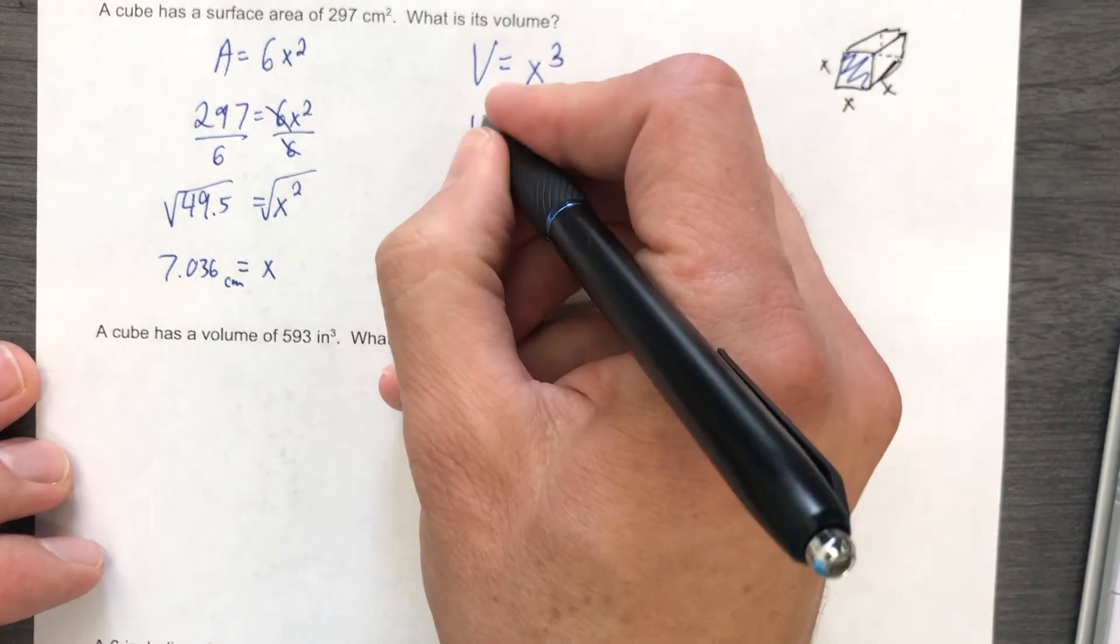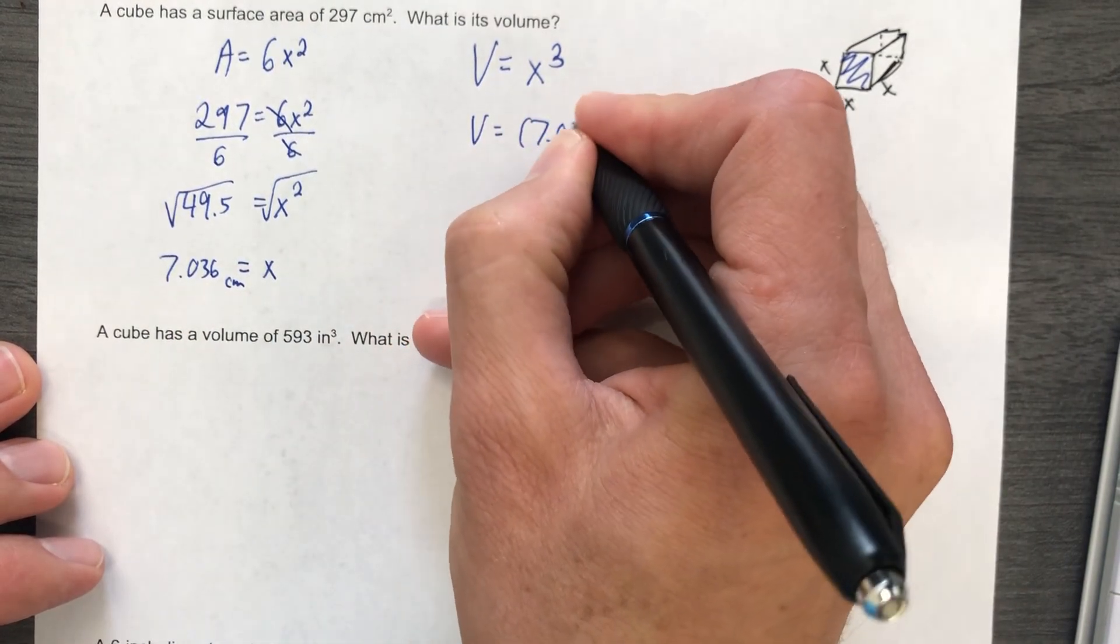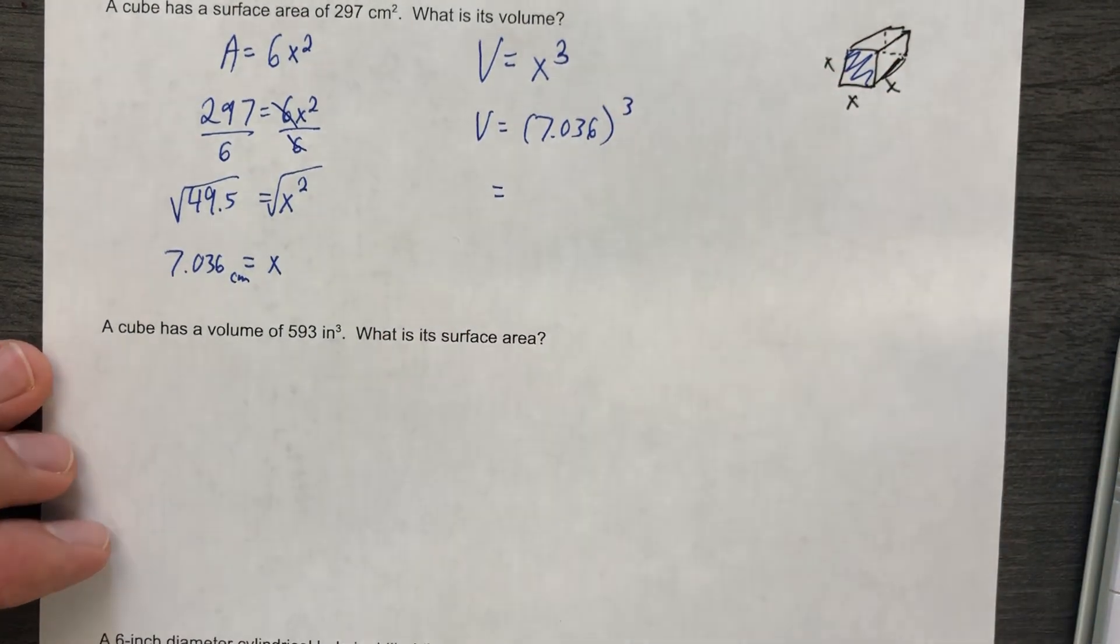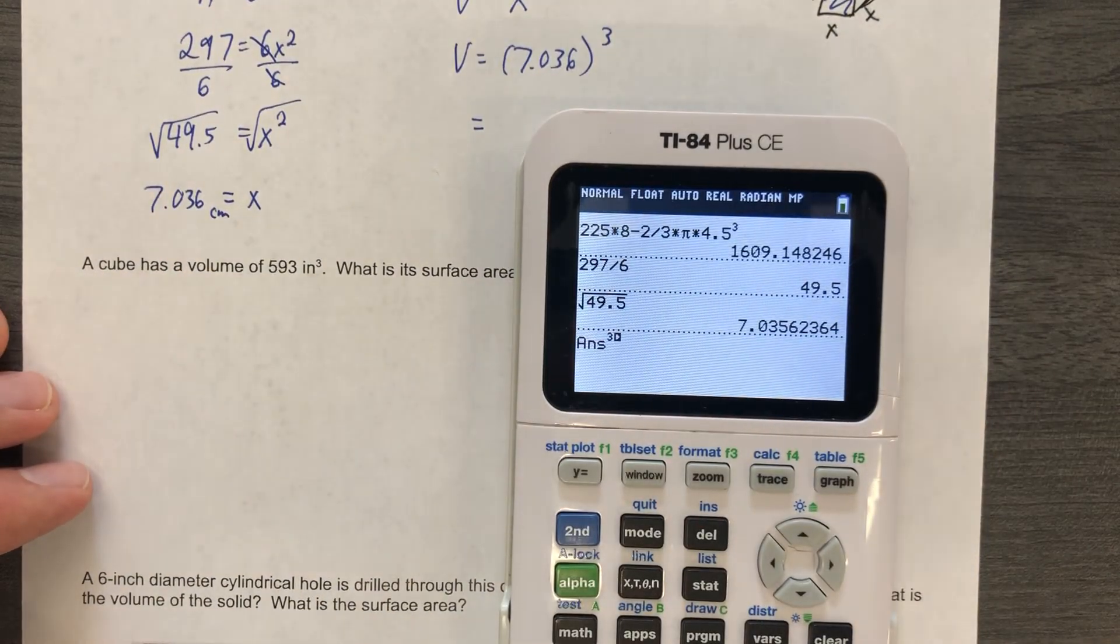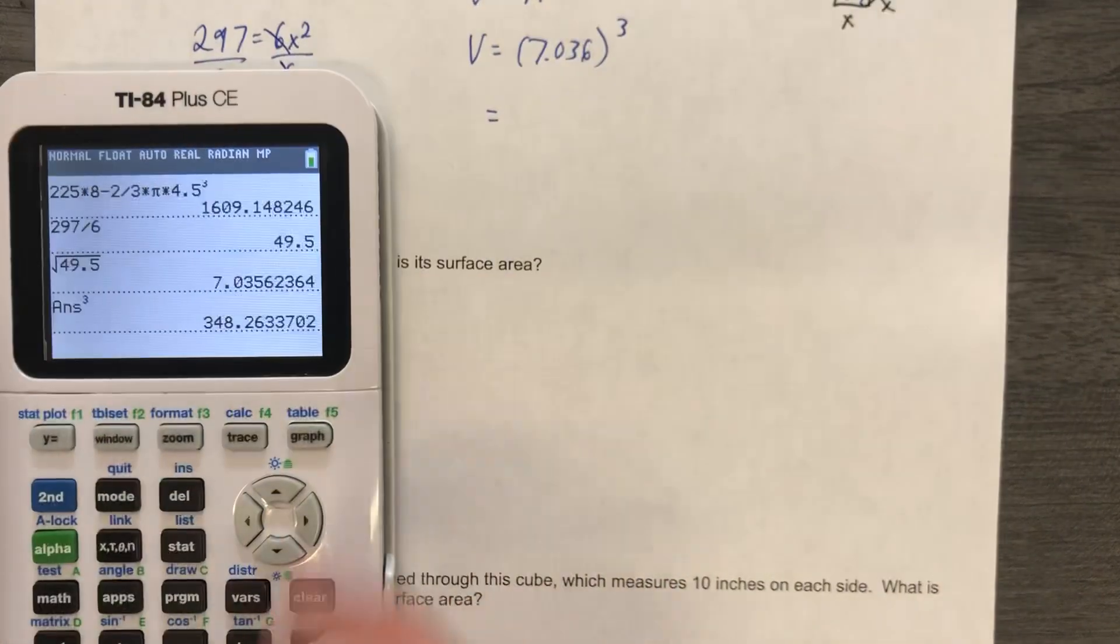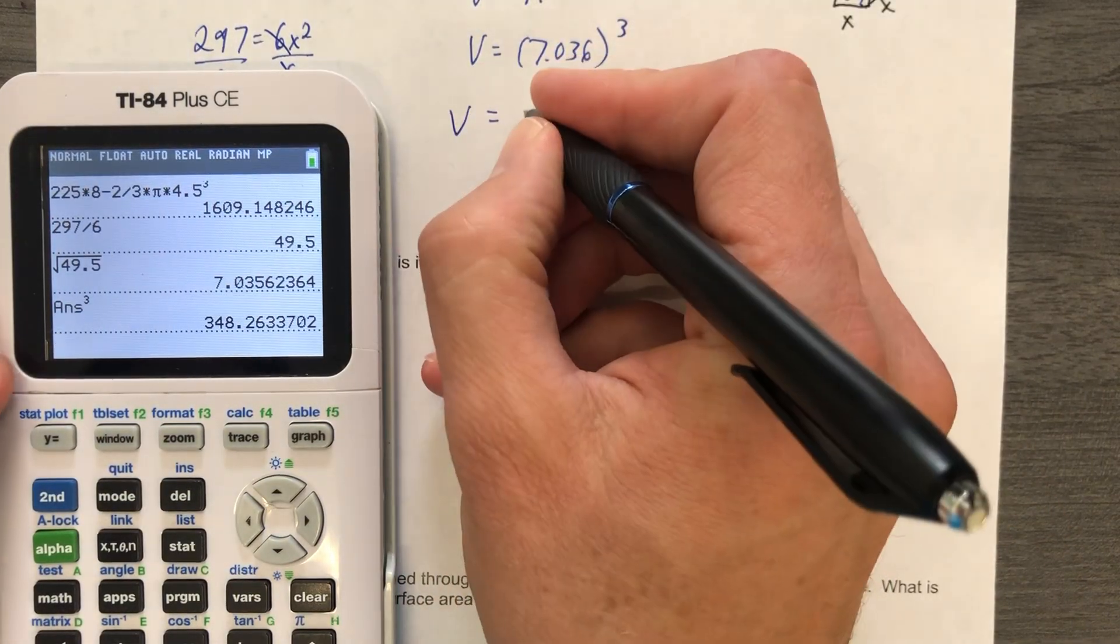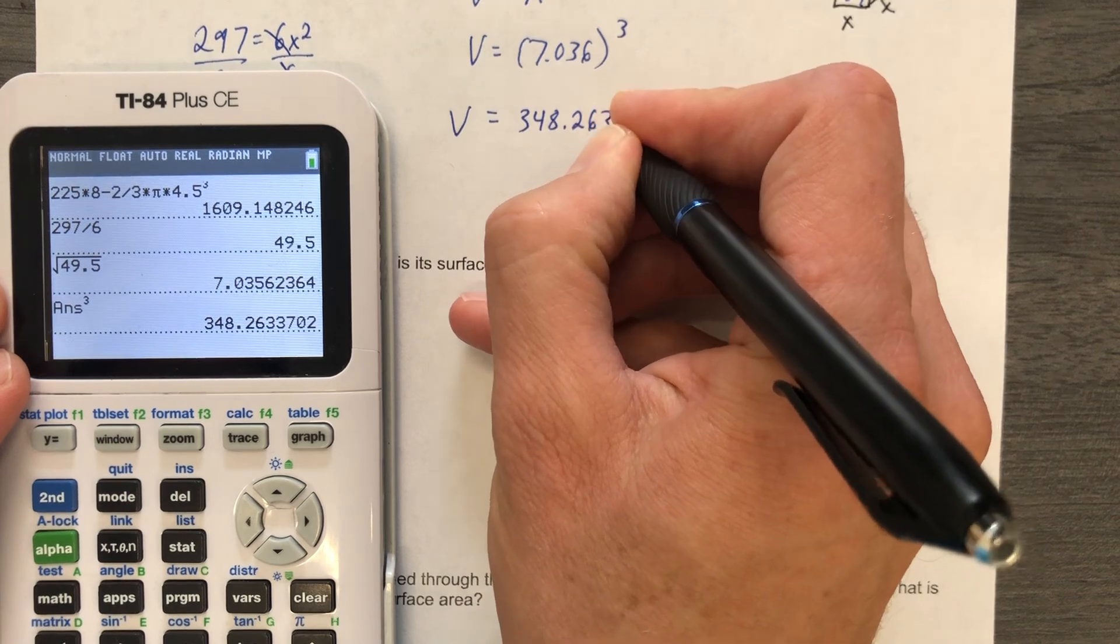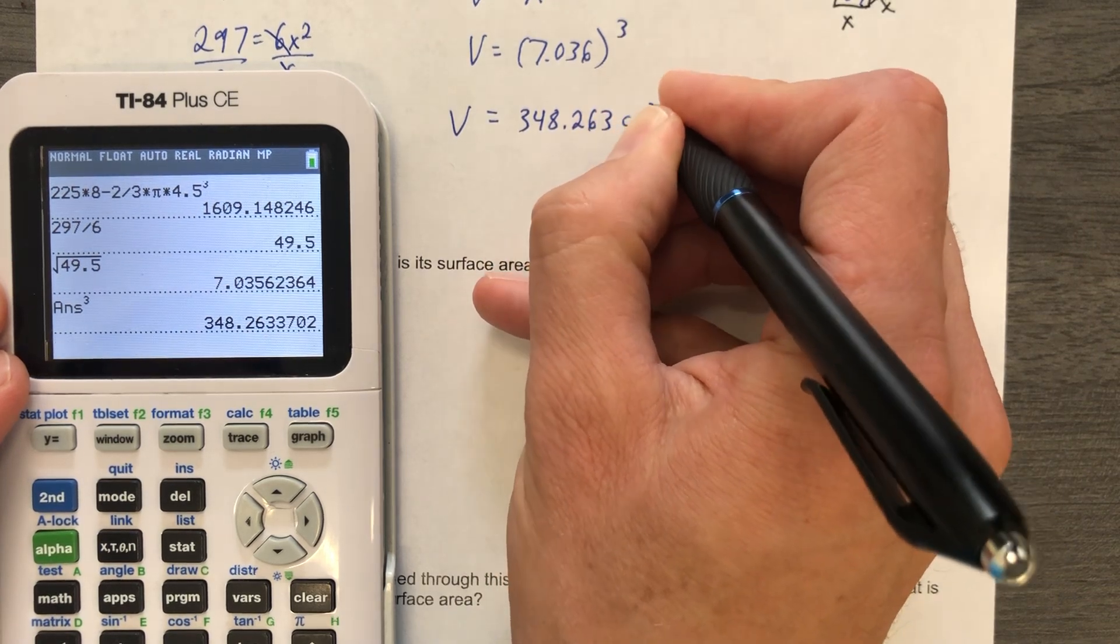We need to find the volume. The volume is going to be 7.036 cubed. It's going to be that easy. So we're going to take that last answer. We're going to raise it to the third power. And that's what we get. And our volume is 348.263 cubic centimeters.